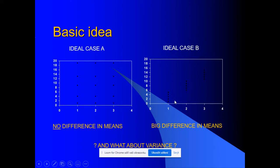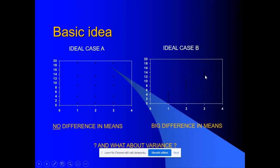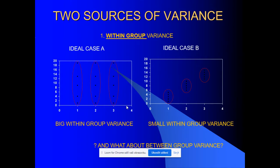For ideal case B, the situation is totally different. Individual values in the first, second, and third groups are quite concentrated — the variance inside groups is quite small compared to ideal case A. If I find the mean for each group, they are increasing and don't seem to be the same. So there is a big difference in means, and we slightly begin to discover what is behind it — the story about variance — which we continue in the following slides.